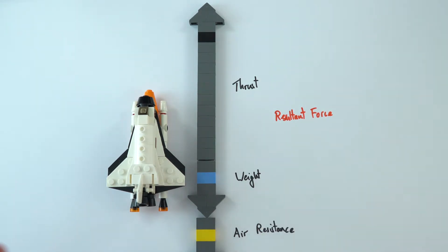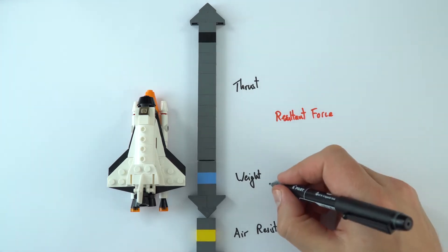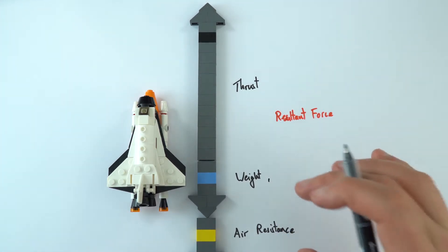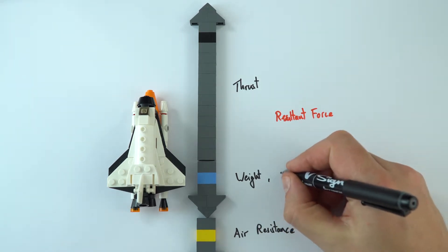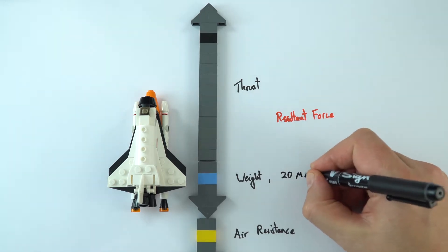Well, let's think about a few numbers because this is what we like to do in physics. Let's imagine the weight. Because it had a mass of 2 million kilograms, the weight is going to be about 20 million newtons. And we write that as 20 mega newtons.